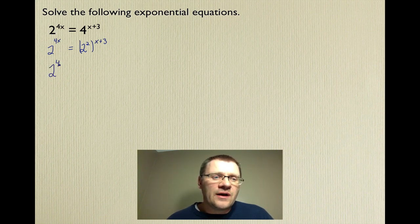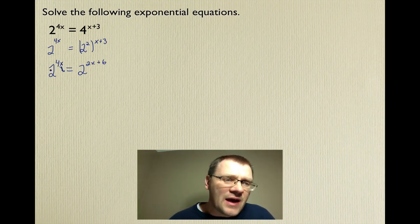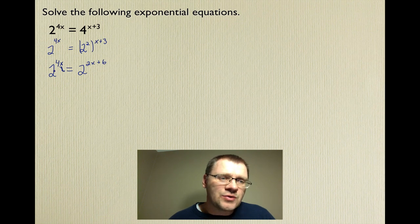So now this is 2 to the power of 4x equals, when we have a power raised to an exponent, we multiply the exponents together. So that's 2 to the power of 2x plus 6. So now hopefully you can see that if we have the same base, 2 to the power of something equals 2 to the power of something, then both those exponents are actually equal to each other. So we can now ignore the base.